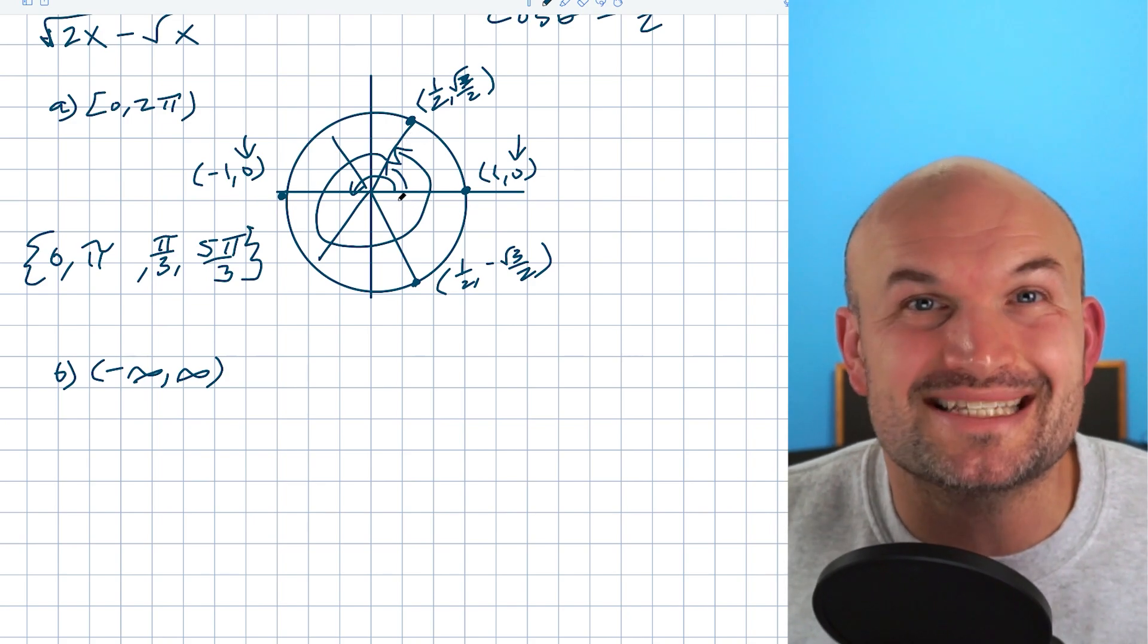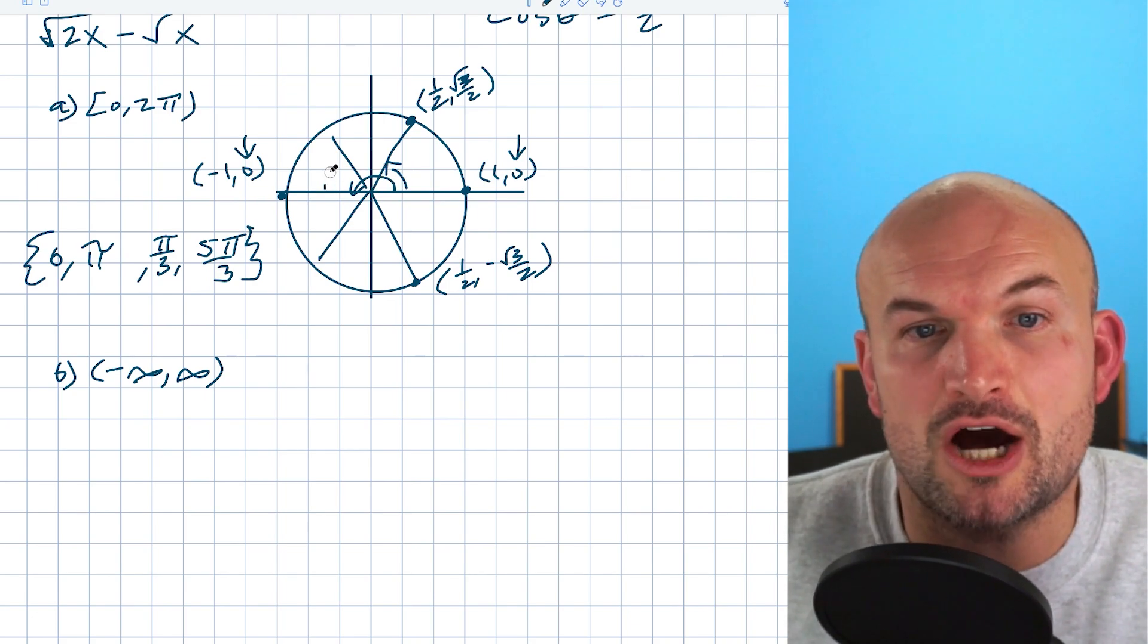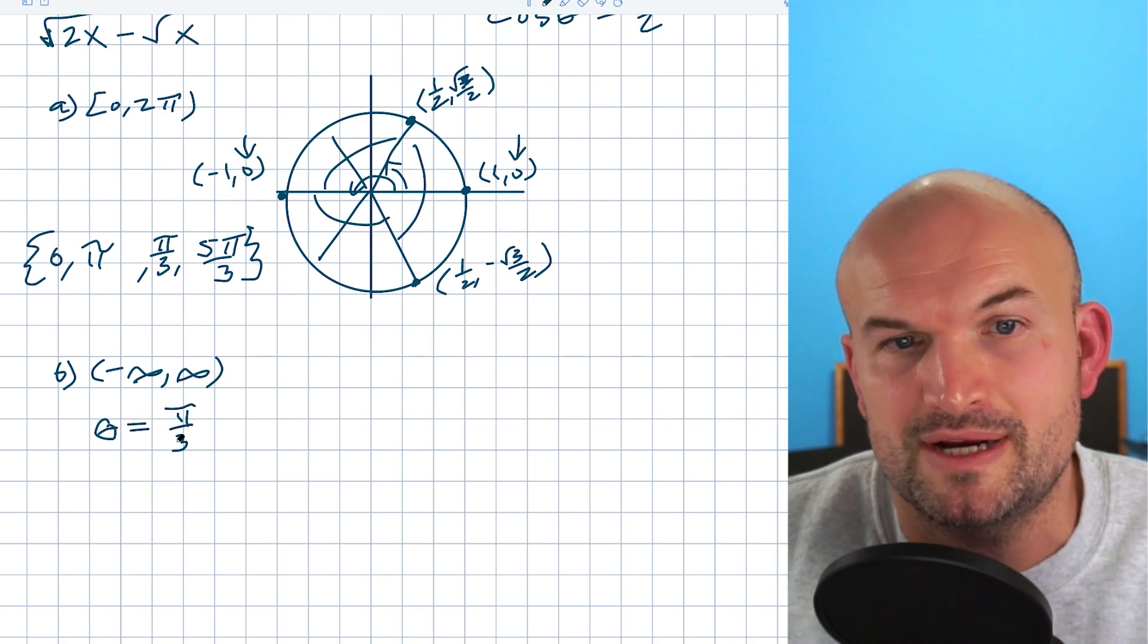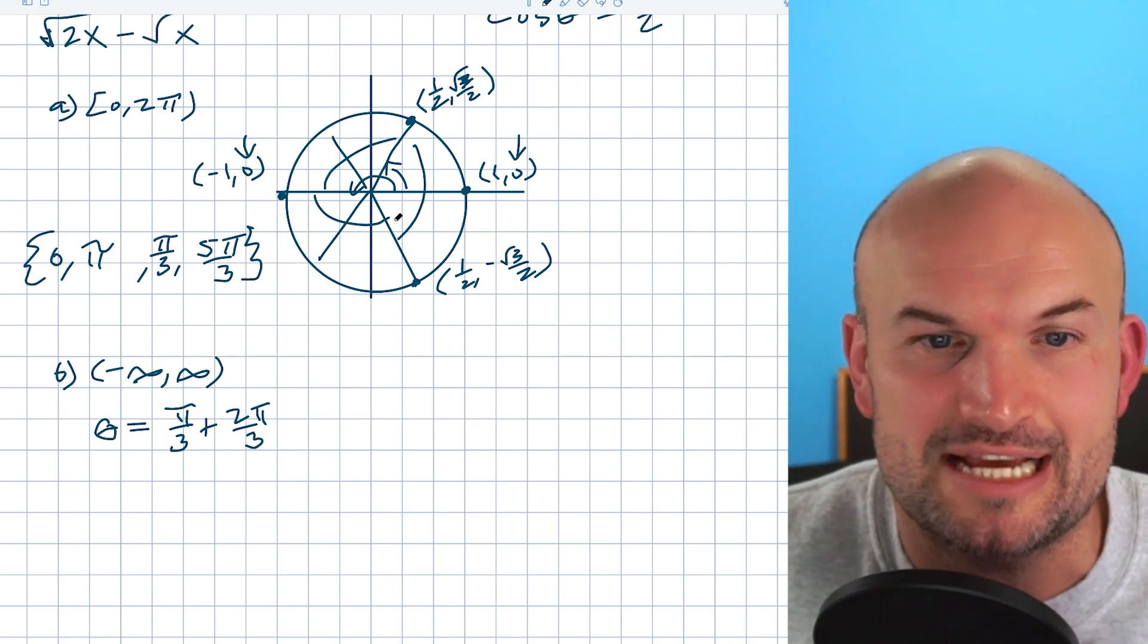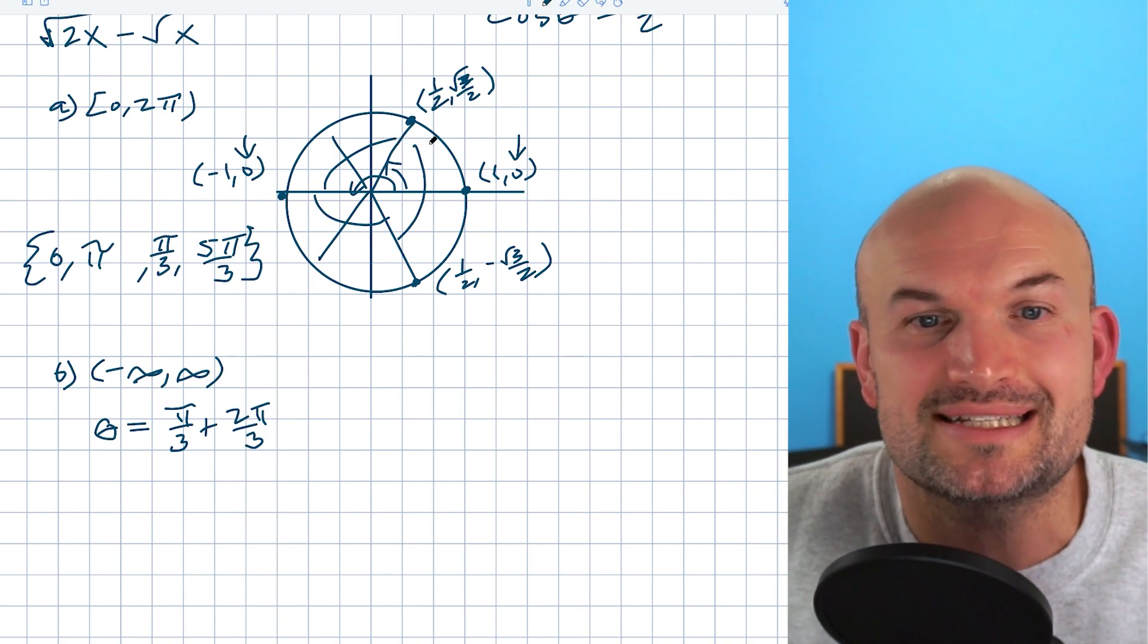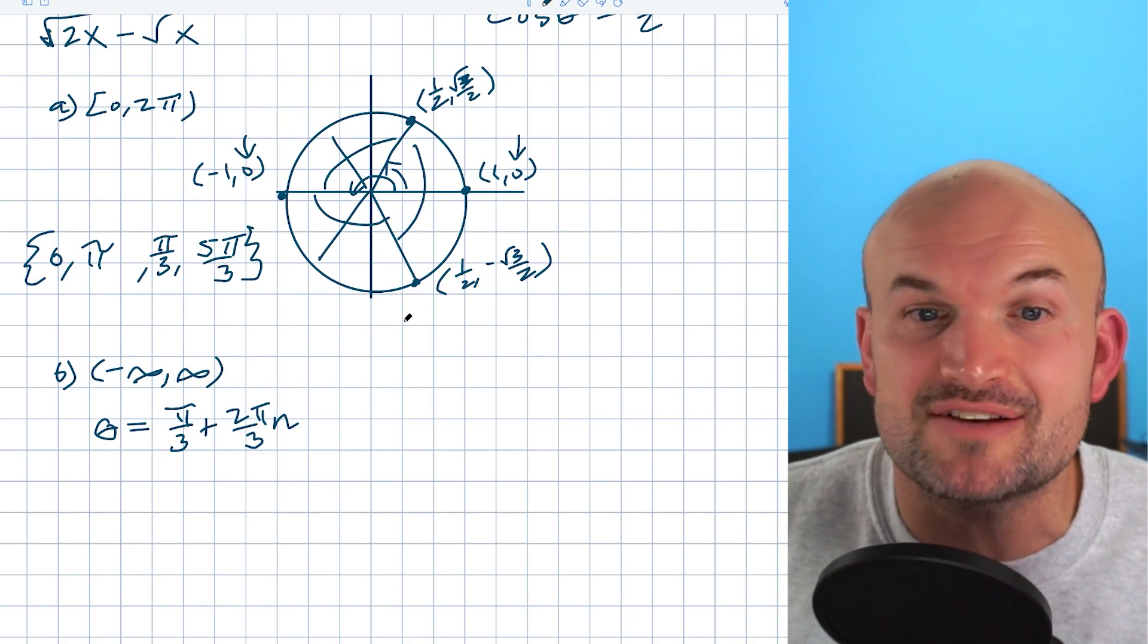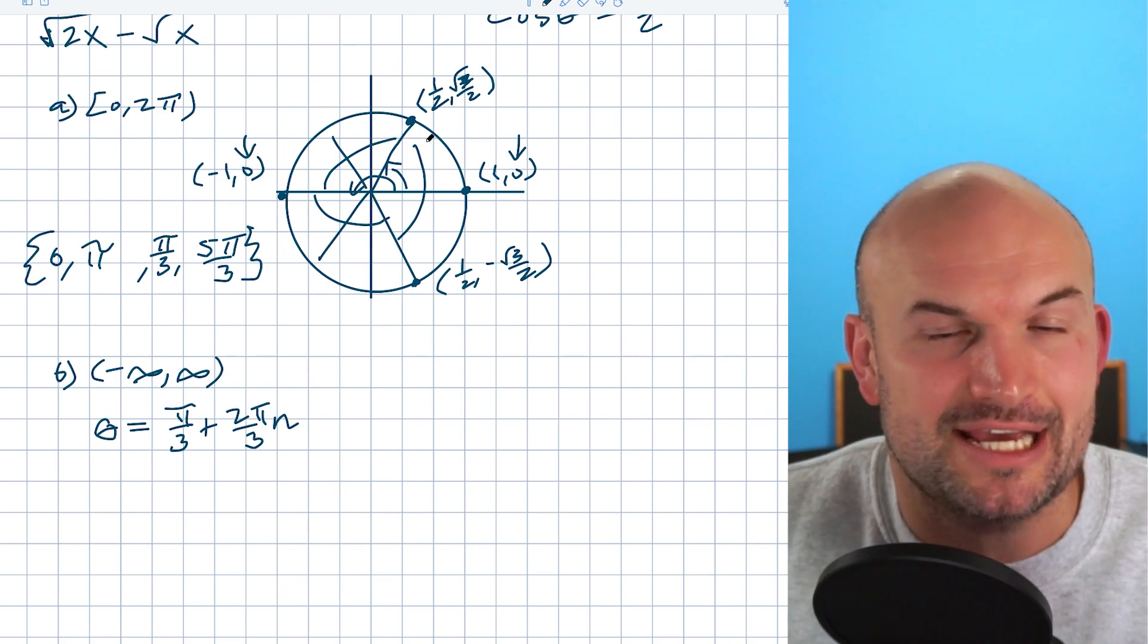What I want you to do is look for relationships between your solutions. One thing I see is all three of these solutions are 2π/3 from each other. So if I took my first solution, θ = π/3, and added 2π/3, that takes me to the next solution. If I add 2π/3 again, that takes me to this solution. If I keep adding 2π/3, it takes me to all these solutions infinitely many times. To represent infinitely many times, I use n, which represents any integer. When it's any integer, it can be positive or negative, meaning we can go in the negative direction.